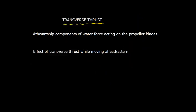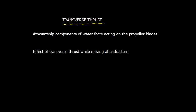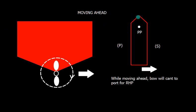Similarly, here we have shown that the resultant force will act in this right direction. As the vessel is moving ahead, pivot point is forward and there is a transverse thrust acting in the right direction, that is on the starboard side of the ship. This will turn the bow towards port side. So we can have a thumb rule here that while moving ahead, bow will cant, cant means turn, to port for right-handed propeller.